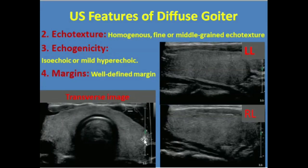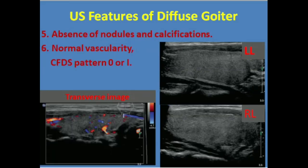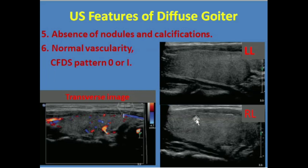The fourth ultrasound feature of diffuse goiter is the margins, which are well-defined. The fifth feature is the absence of nodules and the absence of calcification. Another feature of diffuse goiter is normal vascularity on color flow Doppler sonography. The pattern of vascularity is zero or one — this is pattern one vascularity of the thyroid gland.